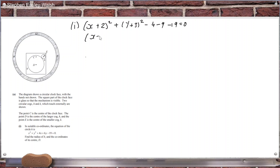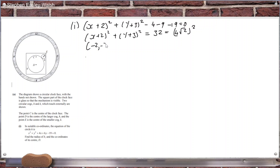So that means (x + 2)² + (y + 3)² equals 32. Now 32 is (4√2)², so the center is (−2, −3) with a radius of 4√2.